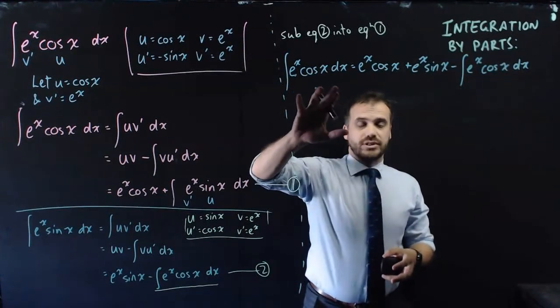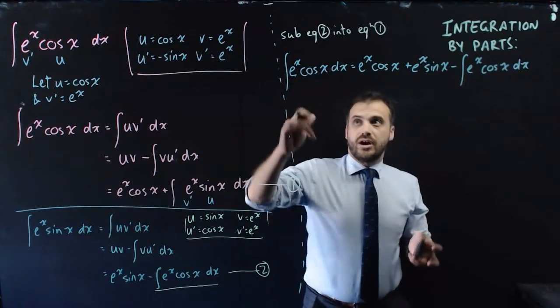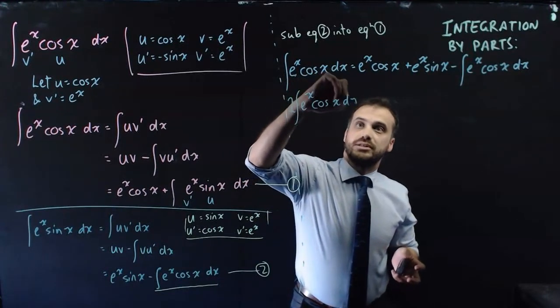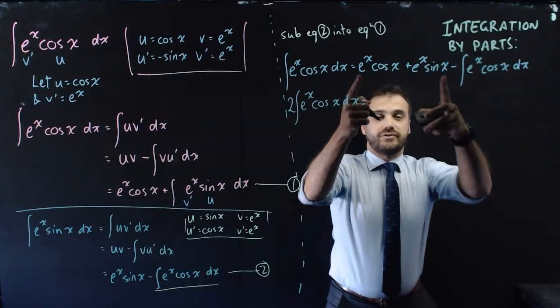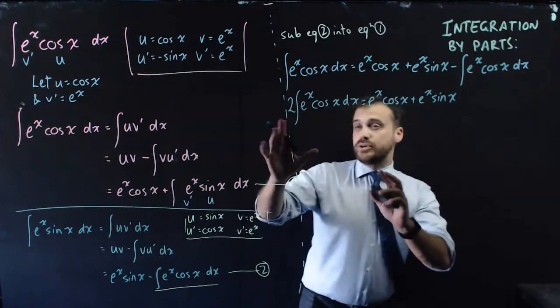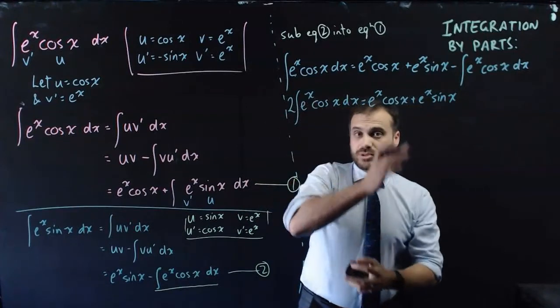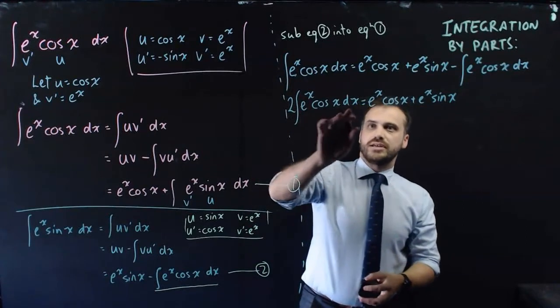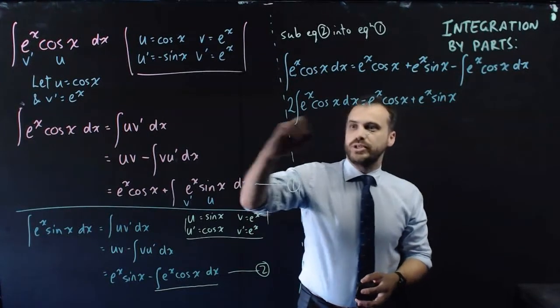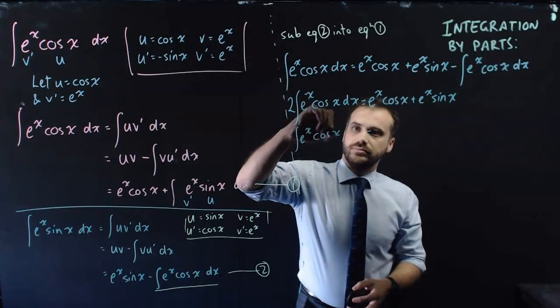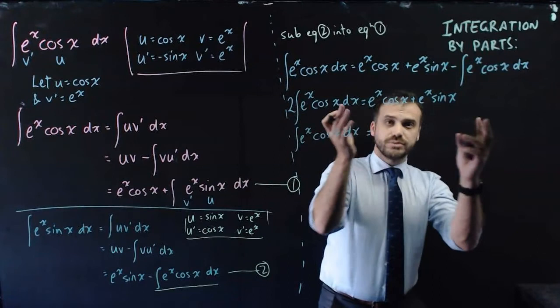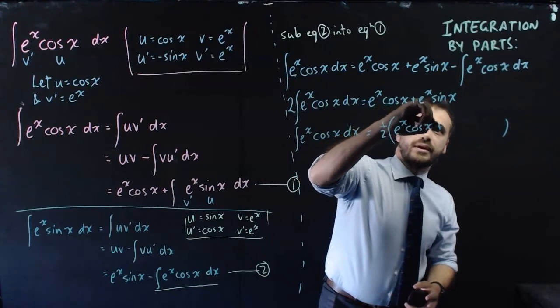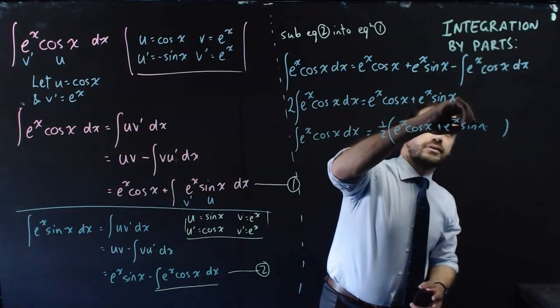If I move that over to the other side, if I add the integral to both sides, I'll get 2 times the integral of e to the x cos x with respect to x equals the stuff that's left over. So we're really done by the shouting here because we were trying to find the integral of e to the x cos x with respect to x. We haven't found that. We found 2 times the integral of e to the x cos x with respect to x. So if we just want to know e to the x cos x with respect to x, we just multiply this side by one half. And we are finished.